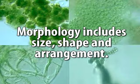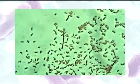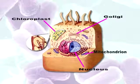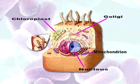Morphology includes size, shape, and arrangement. So far as their size is concerned, since they are microscopic in nature they are very small — from 0.5 to 1 micrometer in diameter — which gives them a very high surface area to volume ratio. This high surface area to volume ratio compensates for many functions that organelles such as mitochondria, chloroplasts, or other membrane-bound organelles perform in eukaryotes.